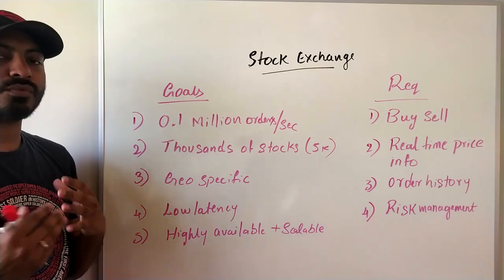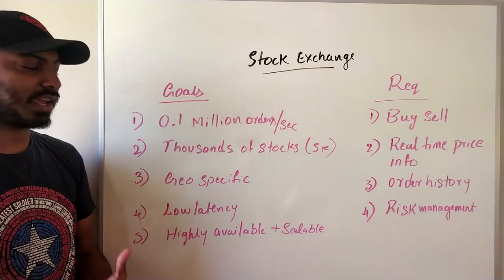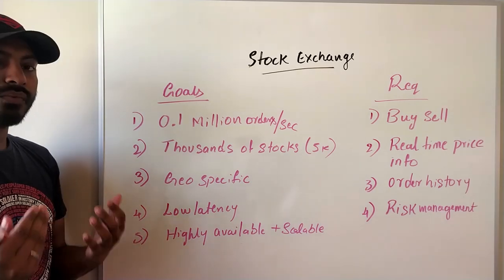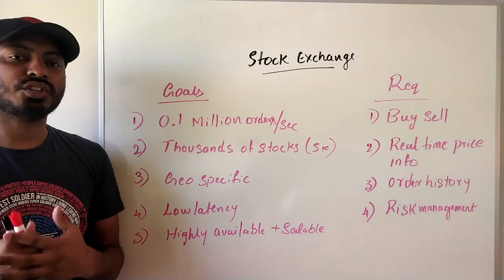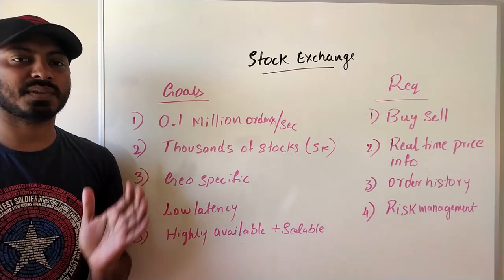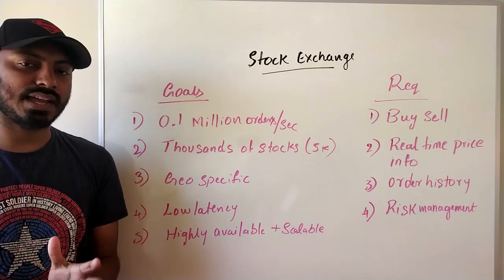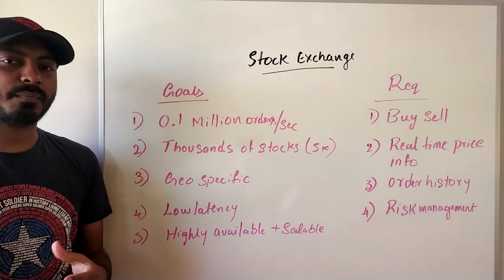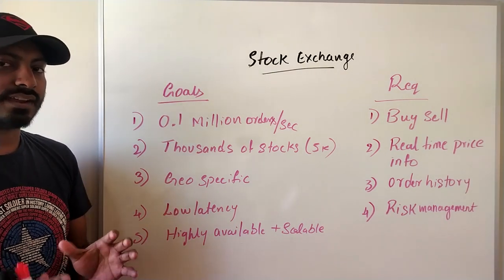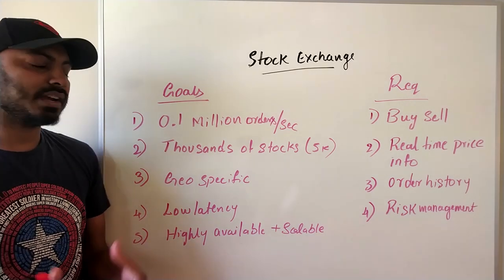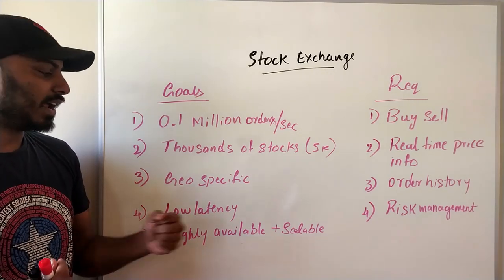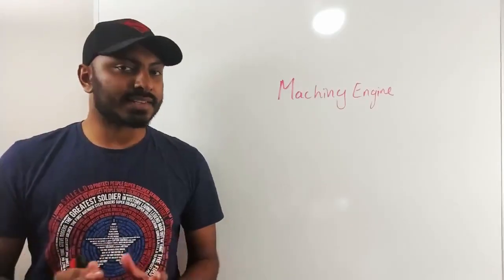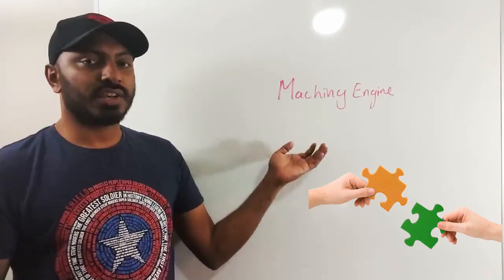The goals of our system are: process at least 0.1 million orders per second; handle thousands of stocks for registered companies with low latency; geo-specific design — we don't need to cater to users from all over the world since exchanges are country-specific; low latency order matching around 300 milliseconds; and high availability and scalability so the system is always available and can scale linearly as more companies or stocks are added.